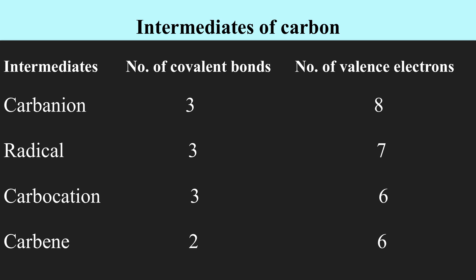Here is the comparison of intermediates of carbon. There are four types: carbanion, which has three covalent bonds and eight valence electrons; carbon radical, which has three covalent bonds and seven valence electrons; carbocation, which has three covalent bonds and six valence electrons; and carbene, which has two covalent bonds and six valence electrons.